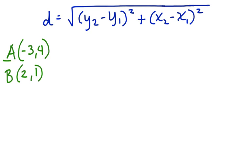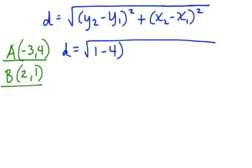Let's call A the x1, y1 pair and B the x2, y2 pair. Now let's substitute those values. d equals the square root of (1 minus 4) squared plus (2 minus negative 3) squared.